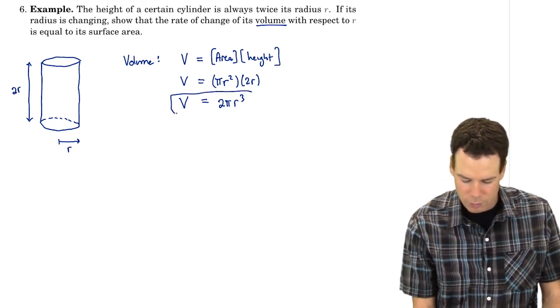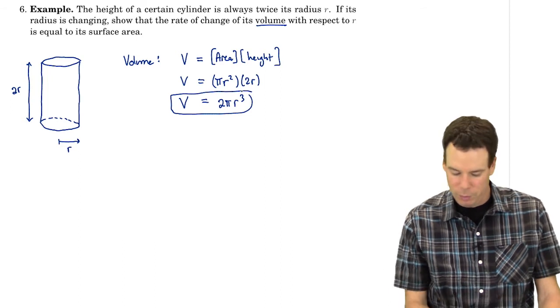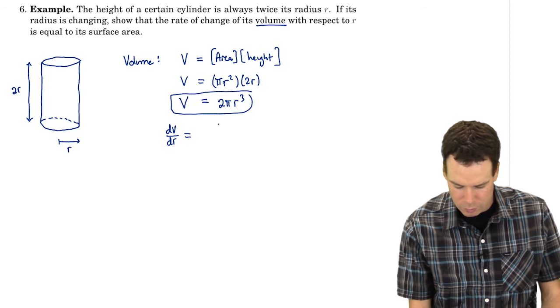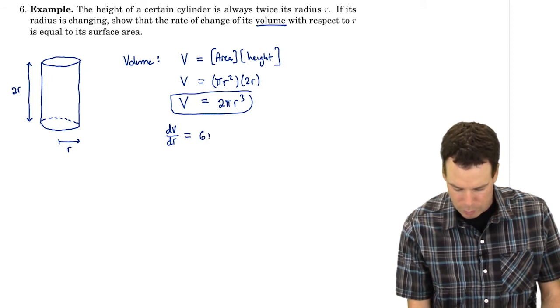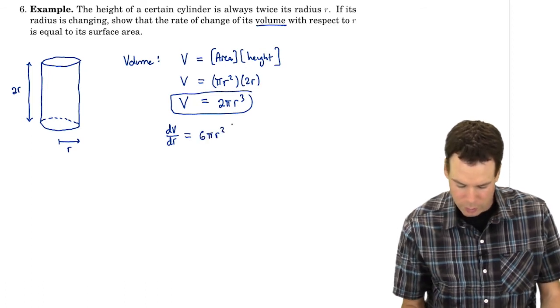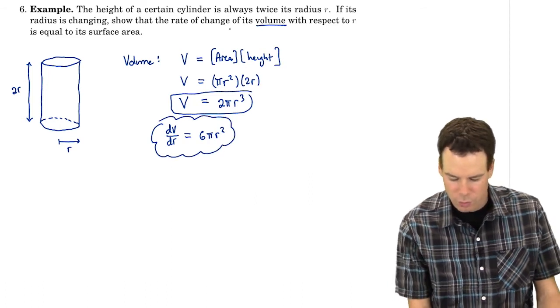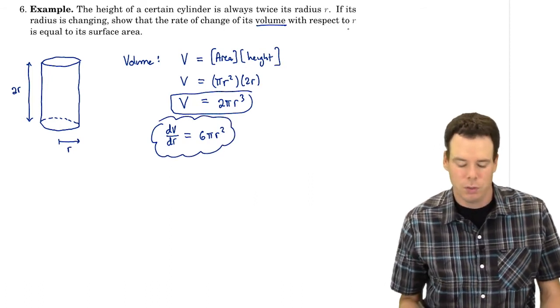Now we'll think of volume as a function of R and work out its derivative. So dV/dR equals 6πR². There's our rate of change of the volume with respect to the radius.